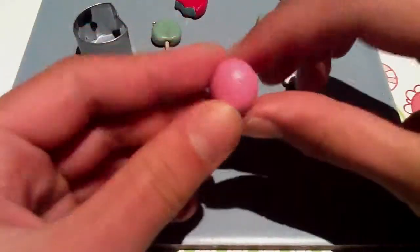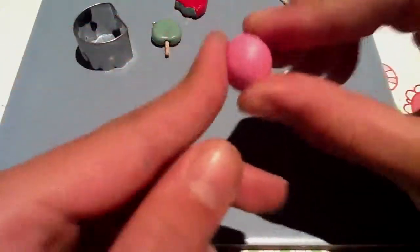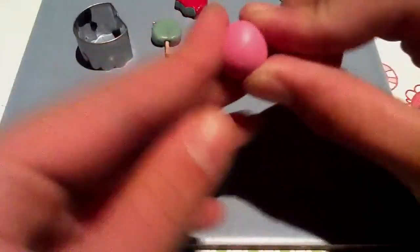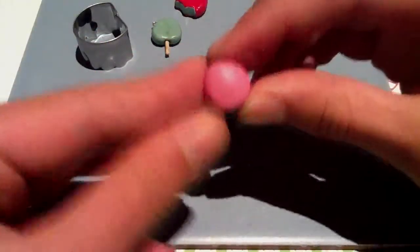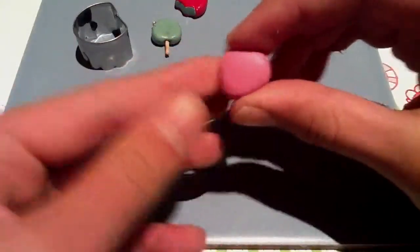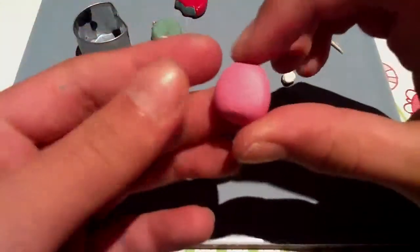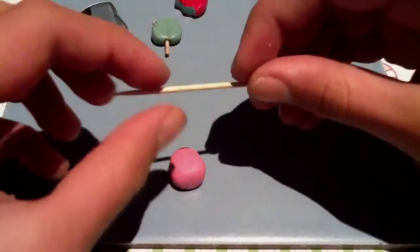The first thing you want to do is grab your ball of the main color and shape it into an arch sort of shape. Then you just want to flatten it until you get a shape like that.